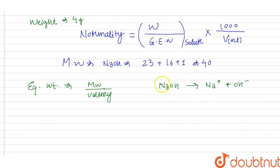Now we can apply this in our formula of normality. It will be equal to weight is given 4 grams, gram equivalent weight is equal to molecular weight divided by the valence, times 1000, and the volume of the solution is 100 ml.